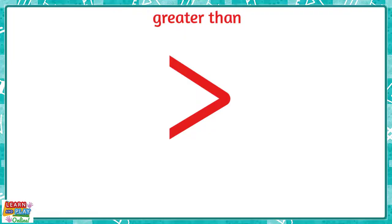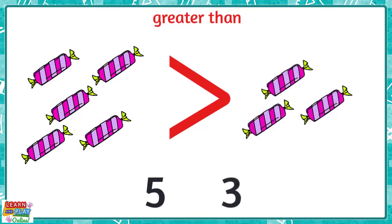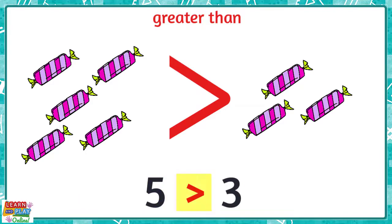For example, there are five lollies on this side and only three lollies on this side. We can see that the number five is greater than the number three because there are more lollies on this side. So we can say that five is greater than three.